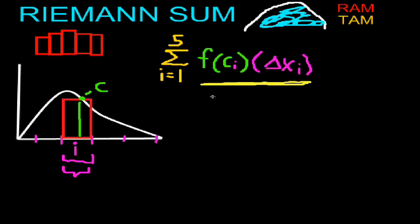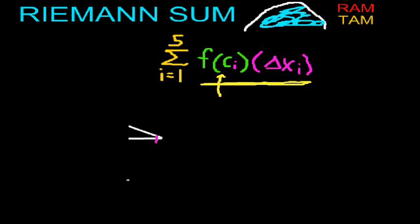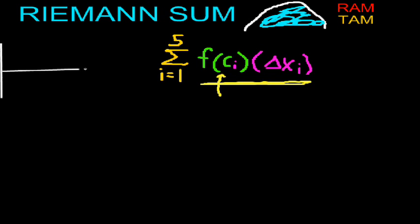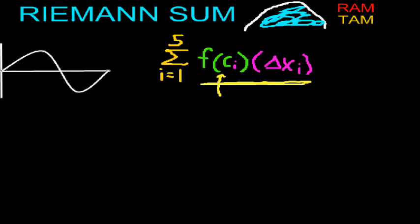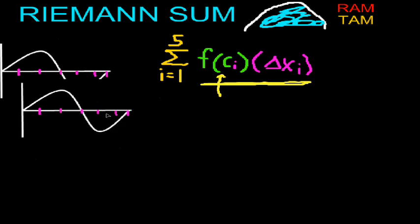Now what makes each approximation method unique is the location of C within the interval. So we're going to discuss each method. You've all heard of at least three methods, but today we're going to talk about five different methods. So let's go ahead and get rid of all of this. We're going to need some graphs, and these graphs are going to show positive and negative values. We're going to need five of these.